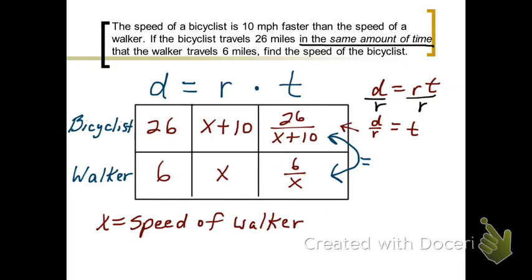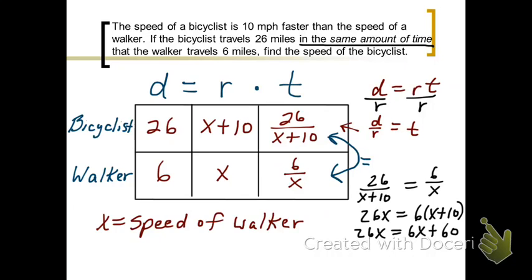And then remember, we said the times are equal. And so now we have what we need to write the equation. So it's 26 over x plus 10 equals 6 over x. We're going to cross multiply. 6 times x plus 10 equals 26 times x. And when you solve that, we're going to get x equals 3.